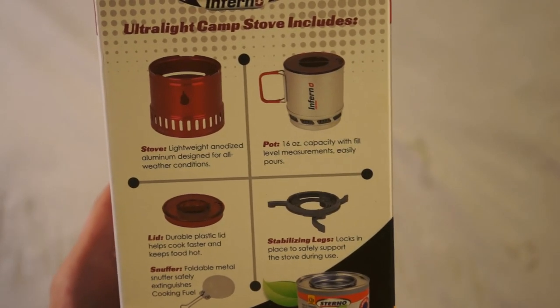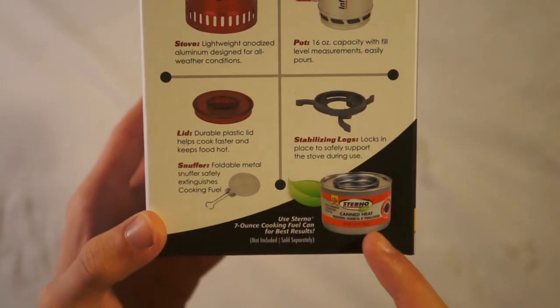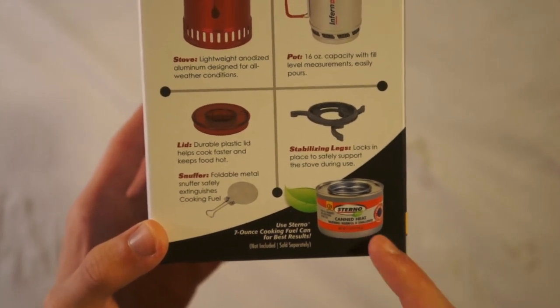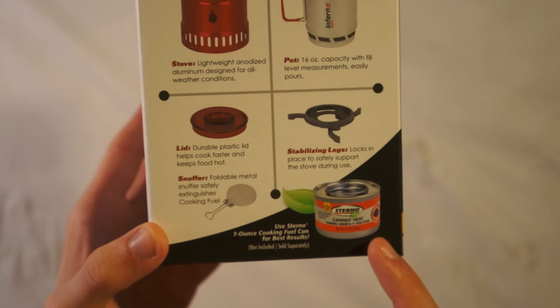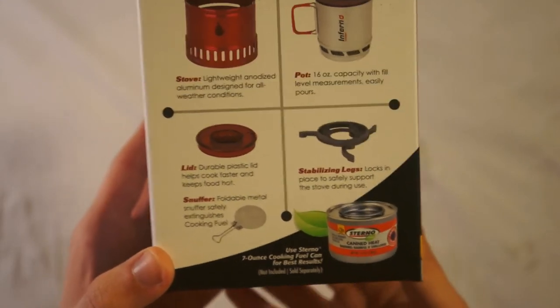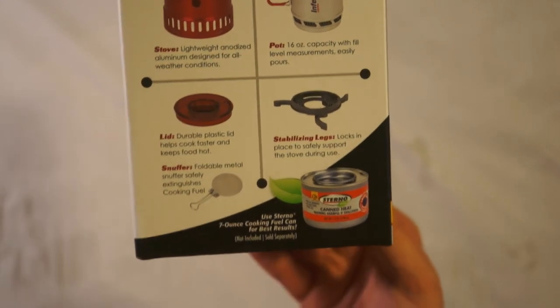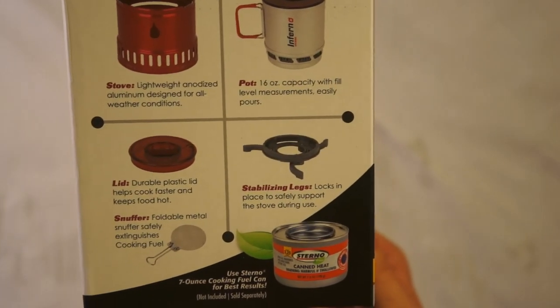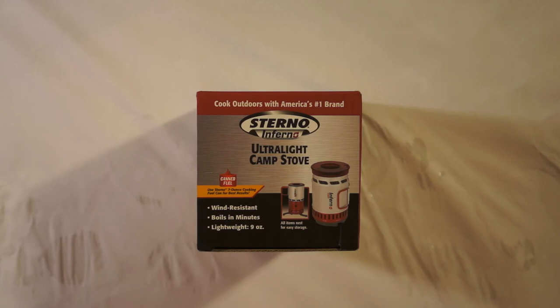And then obviously it does not come with the Sterno heat. So you're going to want to buy a Sterno canned heat. Or you can use Coleman. I think they make some. But for best results use the Sterno fuel can. Thanks for watching. Better reviews with Ethan Jessup. Please like and subscribe if you enjoyed this video.